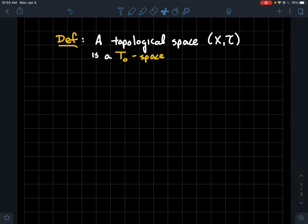This video we're going to go over the definition of a T₀ topological space along with a couple examples. So let's get started. Let's say X is a set and let's say τ is a topology that's on X.